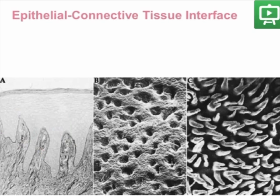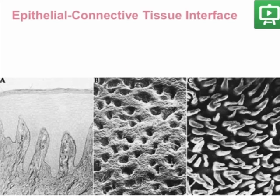We see in a scanning electron microscope the papillae of the connective tissue that are penetrating into the epithelial ridges. This interlocking between the epithelium and the connective tissue is what helps the ultrastructural attachment, along with the hemidesmosomal connections lying on the basal lamina.